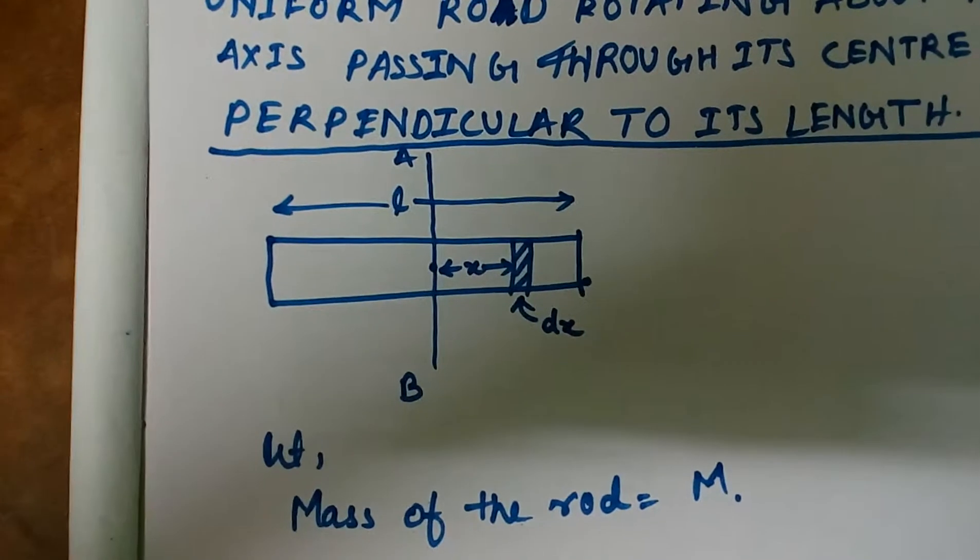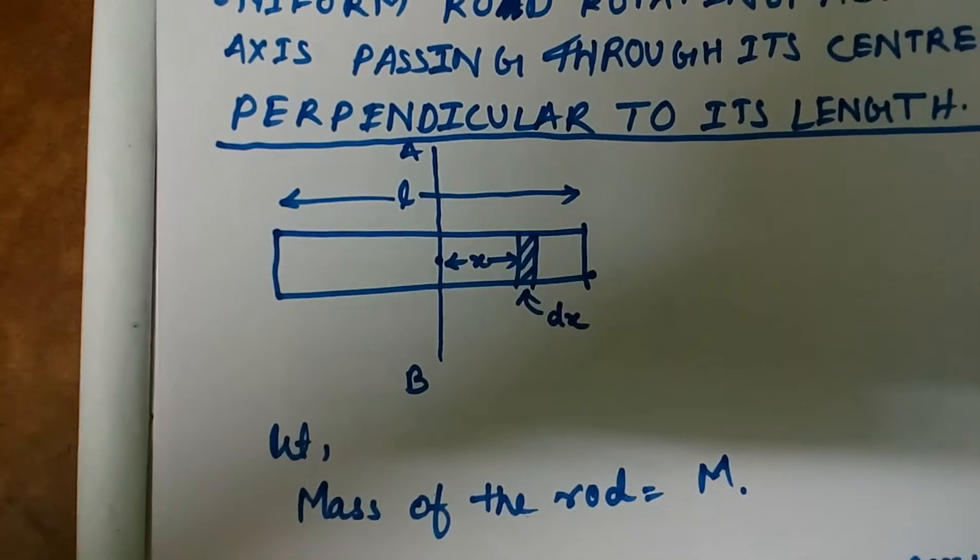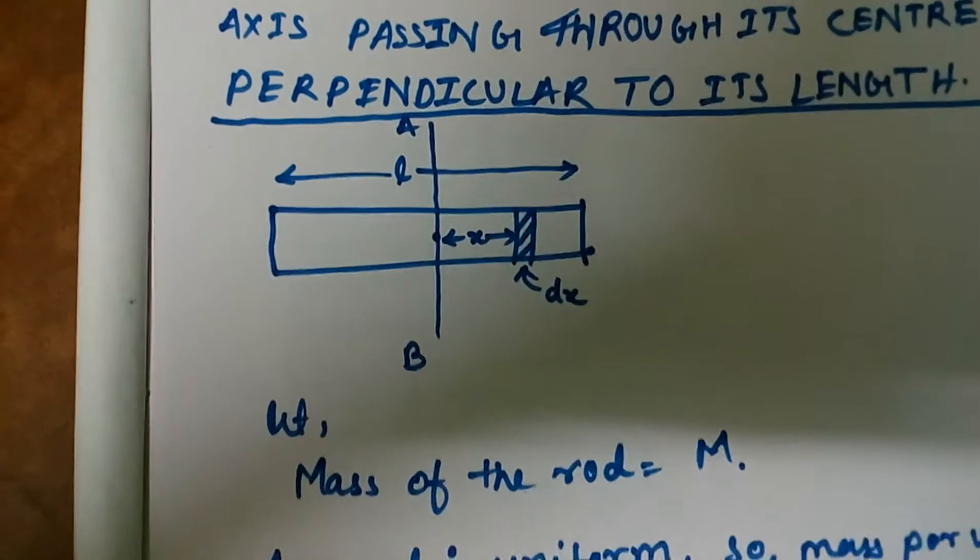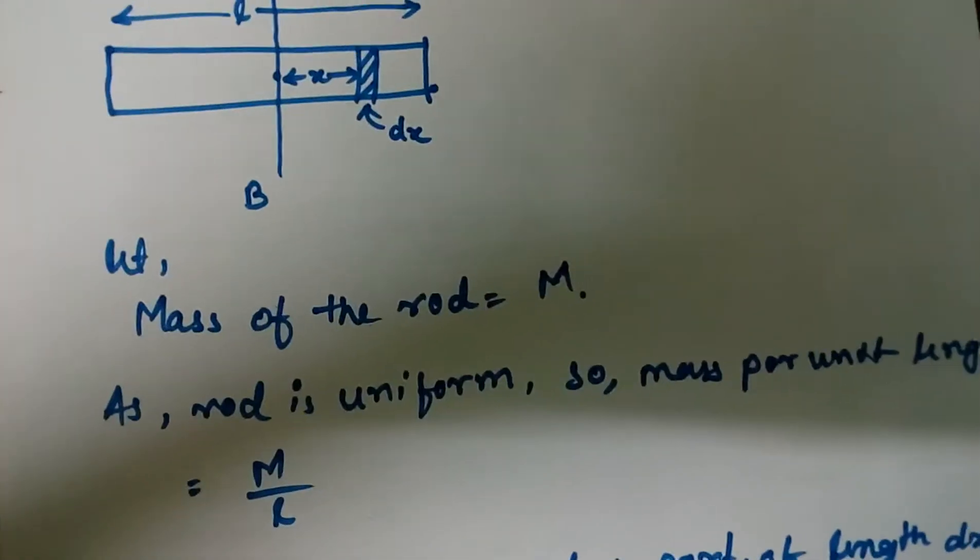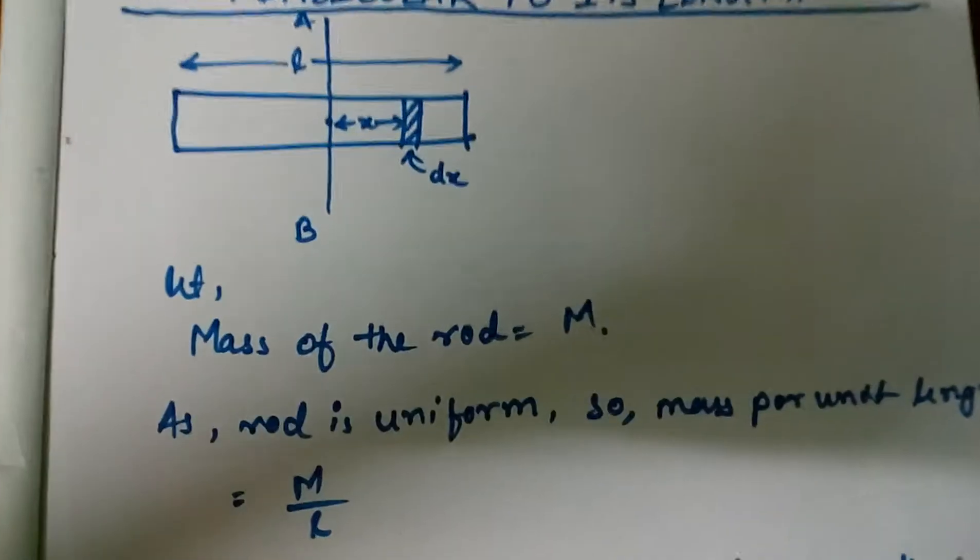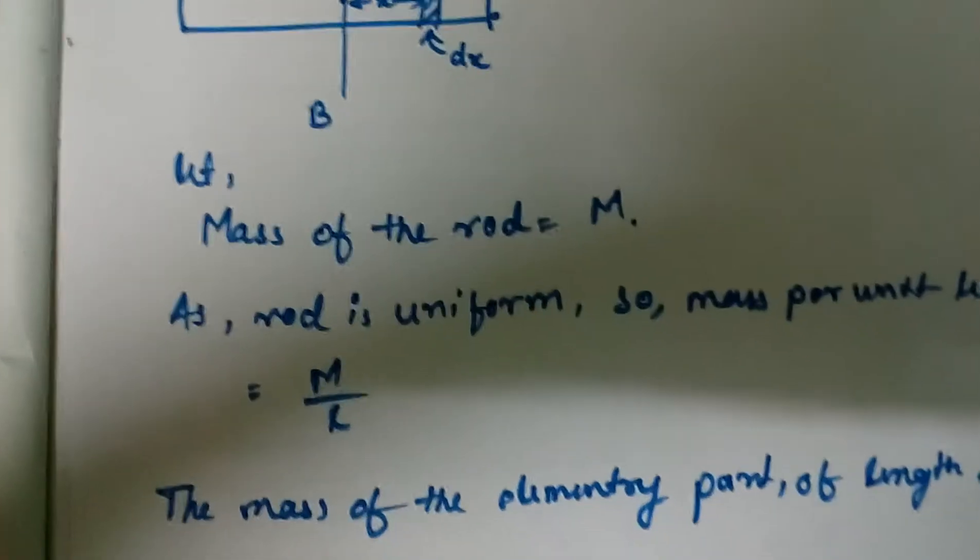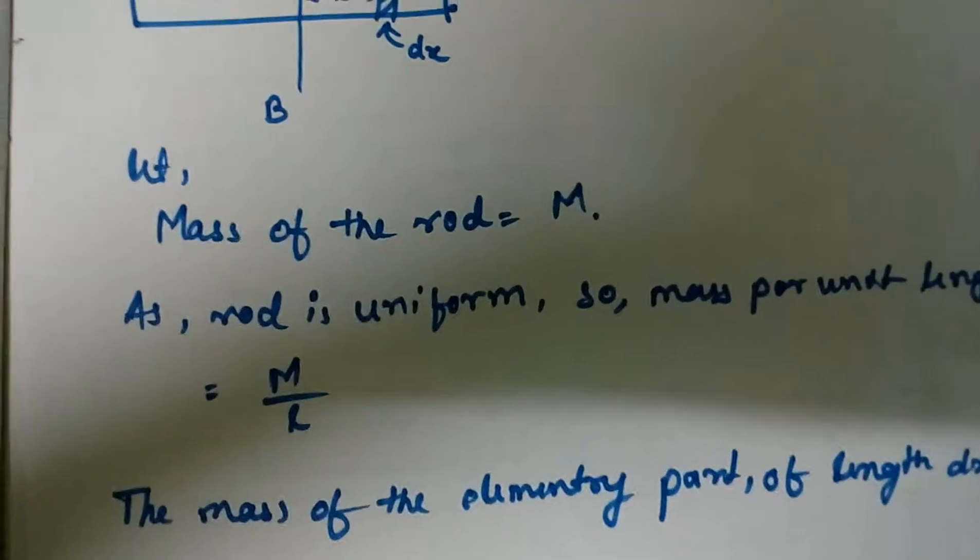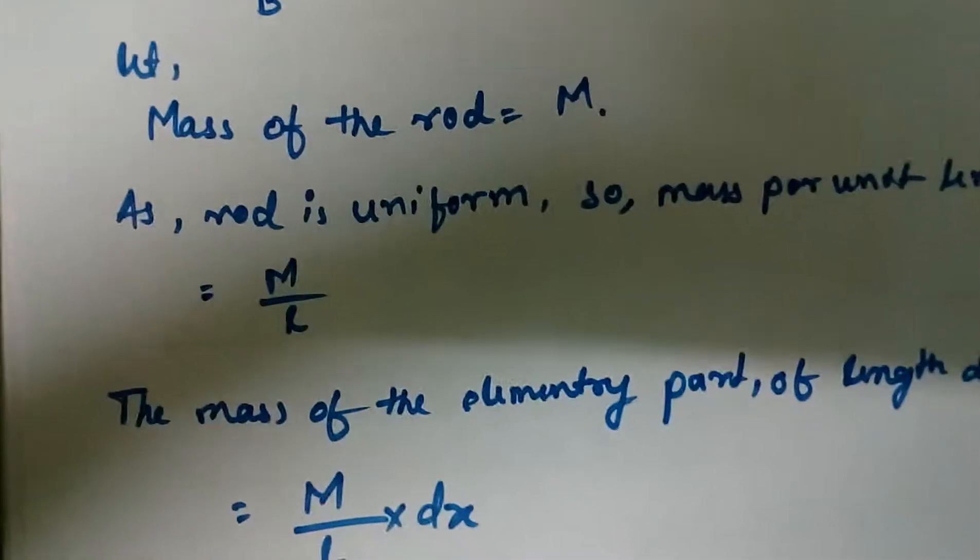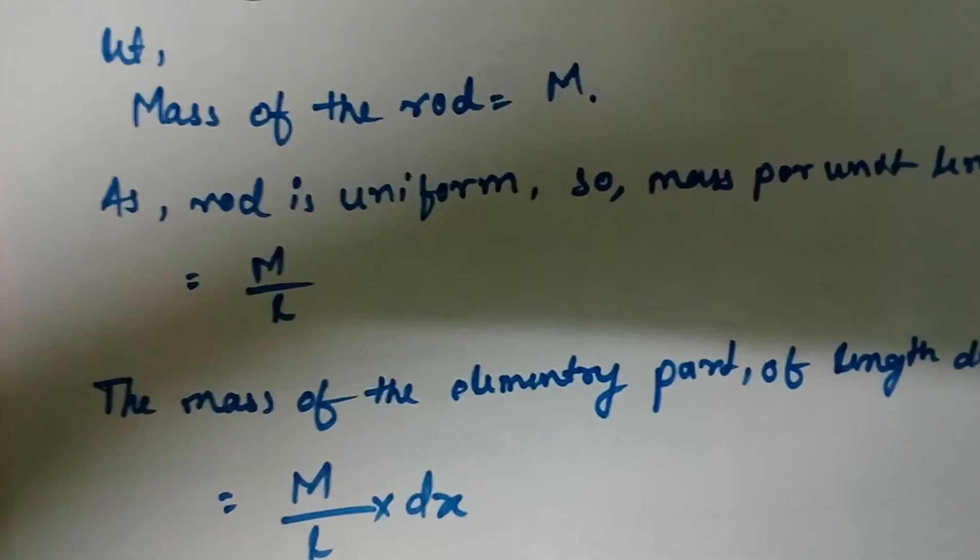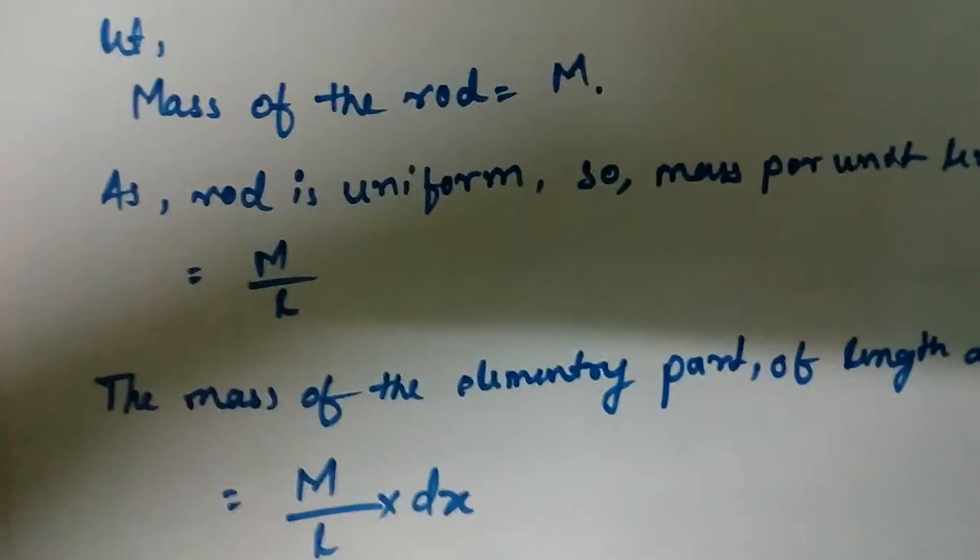Let the mass of the rod be M. As the rod is uniform, the mass per unit length is M by L. The mass of the elementary part, that is the dx, mass of the elementary length of length dx, equals the mass per unit length times the length of the elementary portion.